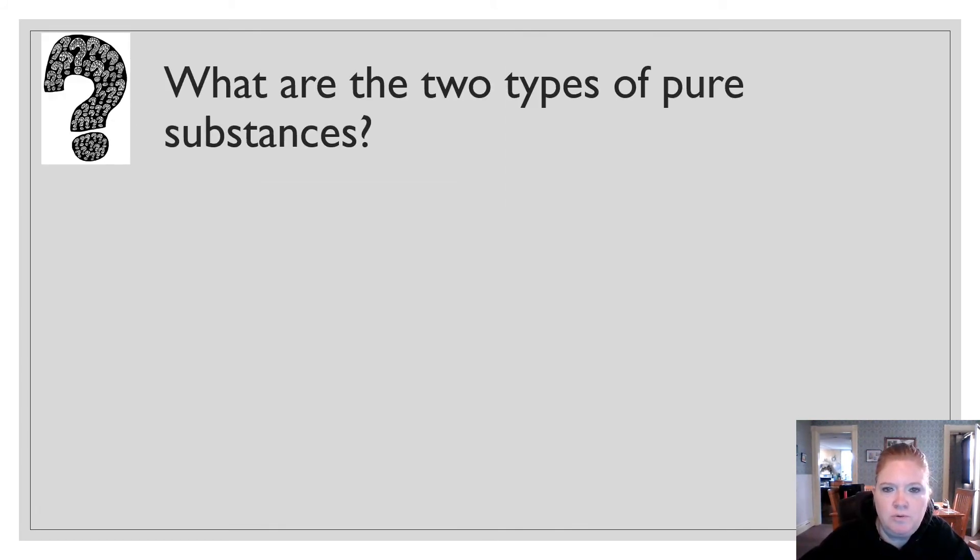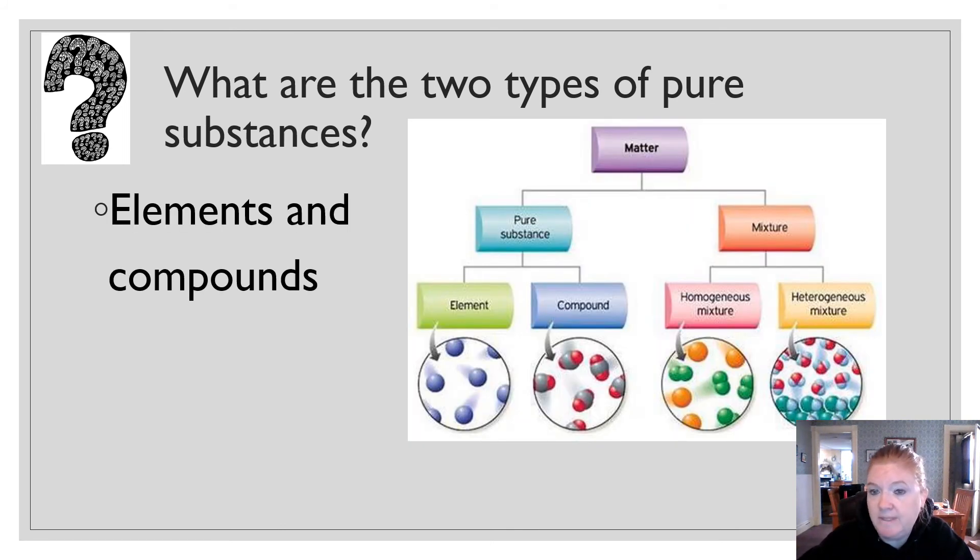So what are the two types of pure substances? Do you remember? Elements and compounds. Those are the two kinds of pure substances.